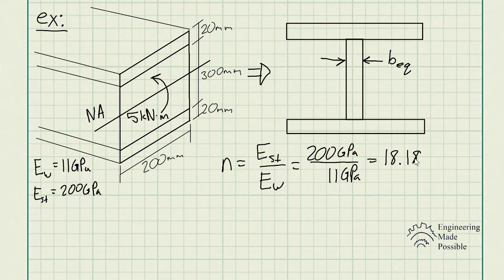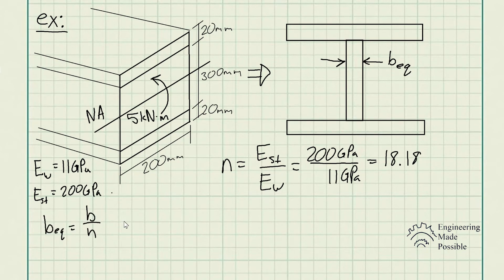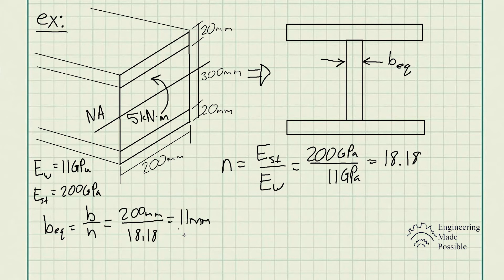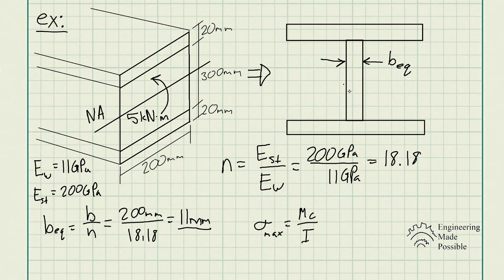To solve for B_equivalent, use the formula: B_equivalent = B_original / N (the original width of the wood divided by the transformation factor), which gives us 11 millimeters. This is the dimension we'll use for the transformed steel section. We can then apply the maximum bending stress equation, with the area moment of inertia calculated based on this B_equivalent.